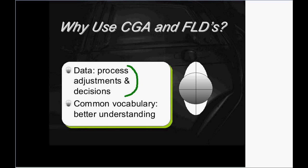First of all, we get some data. If we're going to make a process adjustment, we're going to go back to our press and our die and our material supplier, and we're going to make some sort of change.